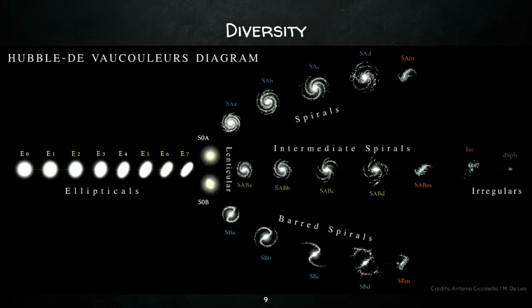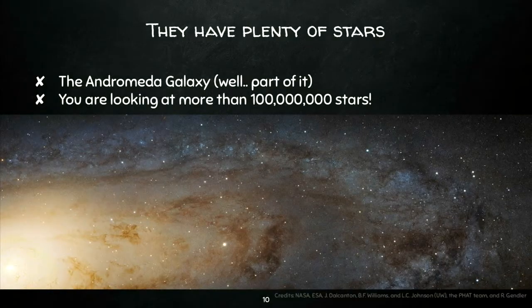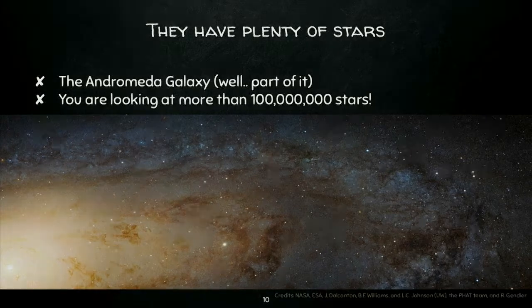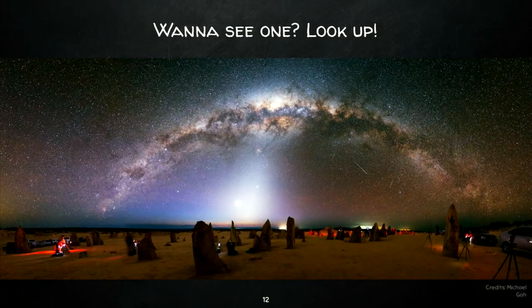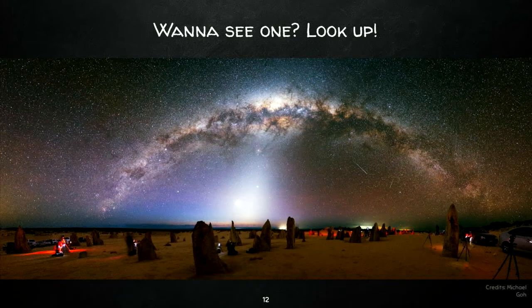Some facts about galaxies: they come in different shapes and styles. If you want to categorize them in two main categories, you could say you have the very boring ellipticals and very interesting spirals. Galaxies have plenty of stars. You're looking at 100 million stars at the Andromeda galaxy. And they can be quite big. For example, the Milky Way is that speck on the bottom left. If you want to see one and you don't have a telescope, don't worry, just go far away from the city and look up. So at this point, you're all experts with galaxies.